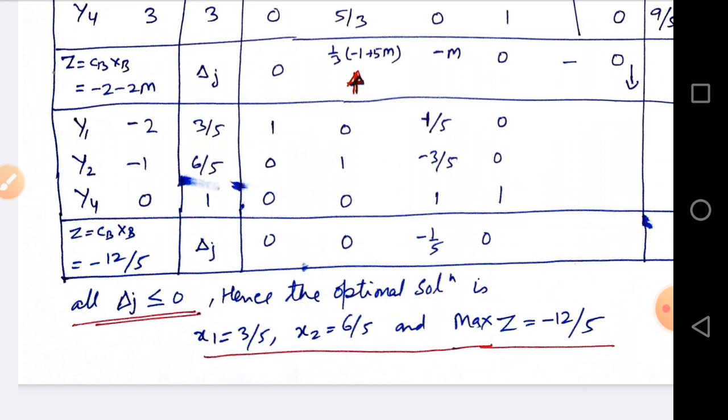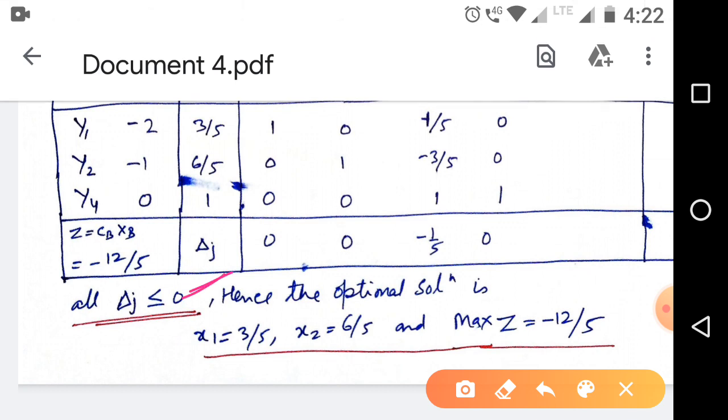Now this is the table without artificial variables. Now apply the usual simplex method. Calculate Z and delta j for all variables and check whether delta j is less than equal to zero. Here all delta j are less than equal to zero. This is the condition of optimality.